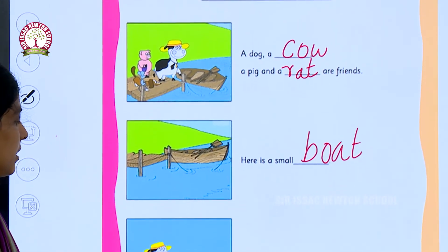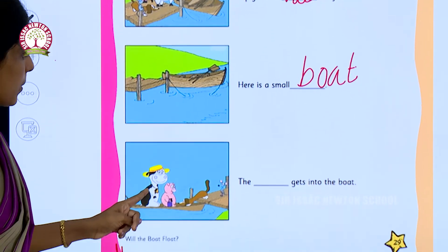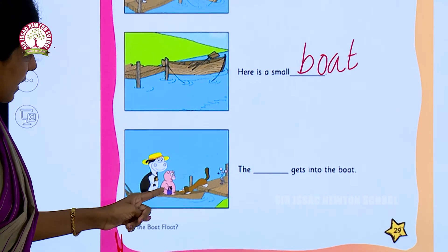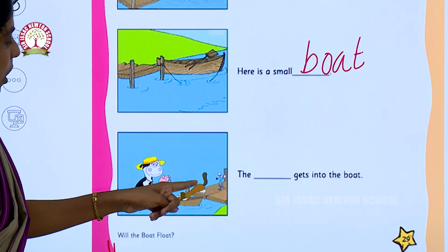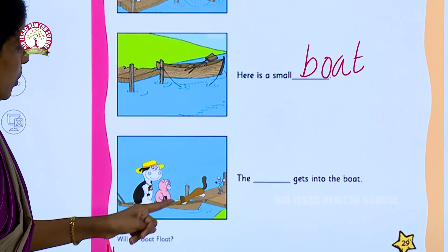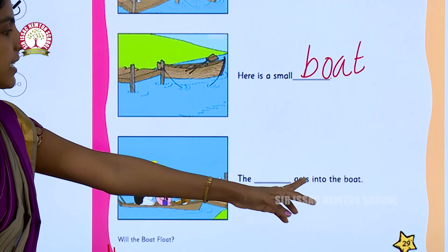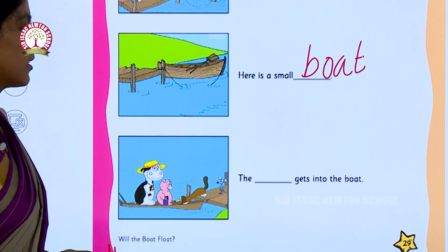Look at the third picture children. A cow is sitting on the boat and the pig is sitting on the boat. The dog gets into the boat. The dash gets into the boat. The dog gets into the boat.